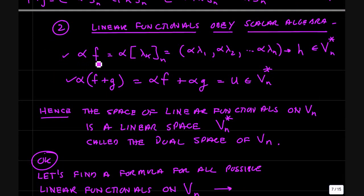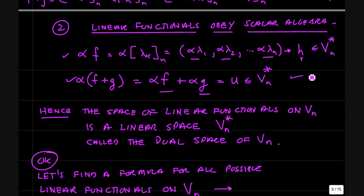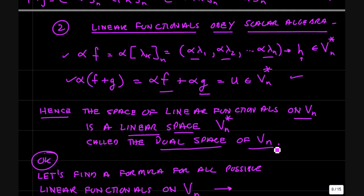We also need scalar multiplication: alpha times the linear functional f, represented as a sequence lambda k, gives a new sequence alpha lambda1, alpha lambda2, and so on — another functional h in vn star. You can distribute alpha over the sum of two functionals, giving a new functional in vn star. That's enough to show that the space of linear functionals on vn is itself a linear space vn star. The space vn star, which always exists for any space vn, is called the dual space of vn — the space of linear functionals, a function space on vn.